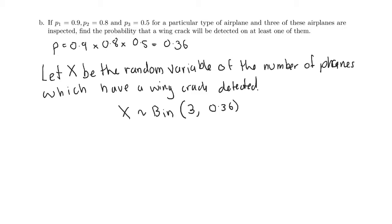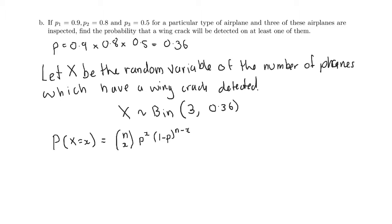Since X is binomially distributed, the probability of X taking a particular value x is given by the binomial formula: n choose x, times p to the x, times (1 − p) to the (n − x). Here n = 3 and p = 0.36.